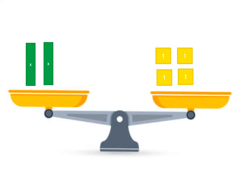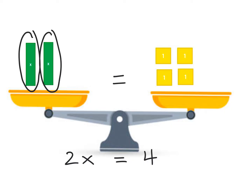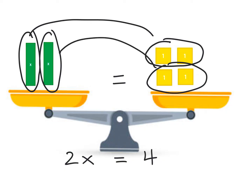Let's look at another one. I have a scale with two sides equal to each other. I see two Xs equal to four 1s. What does X have to equal? I've got two Xs, so I split the four 1s into two groups — each X tile is worth 2. If each X is 2, then 2 plus 2 is 4, which matches the other side. So the final solution is X equals 2.